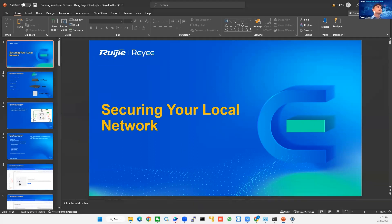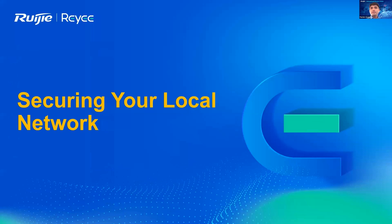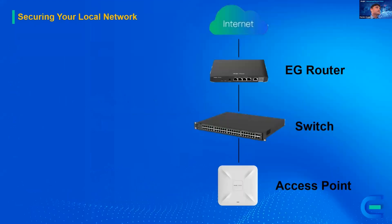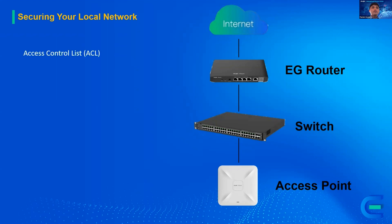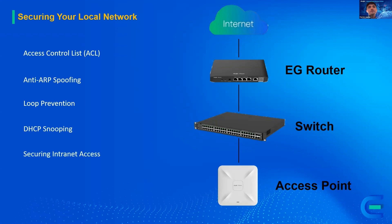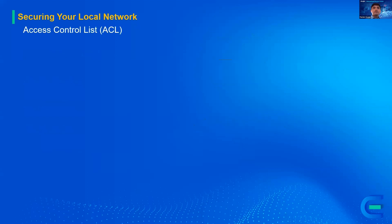Let's start now. Earlier we discussed BYOB, so now how can we secure our network? We have this router, switch, and access point configured earlier. Let me show you how to secure our local network using the Reyee Cloud and the Reyee Cloud app. We have some sample security features: Access Control List, Anti-ARP Spoofing, Loop Prevention, DHCP Snooping, and securing the intranet access.